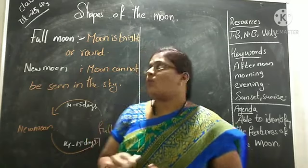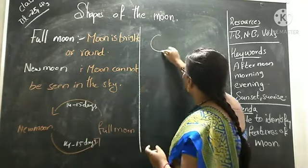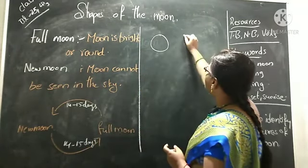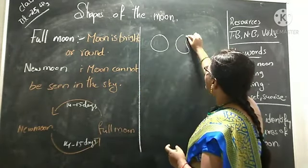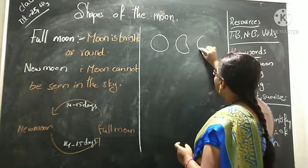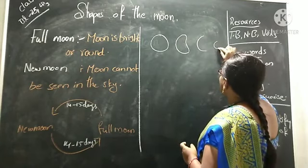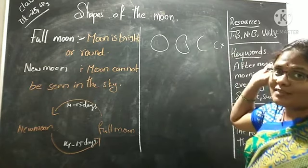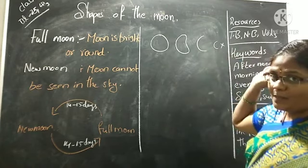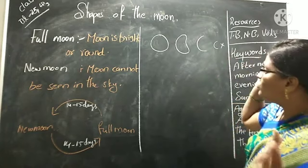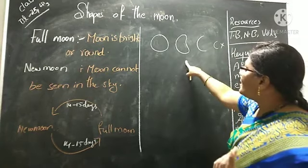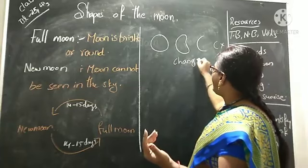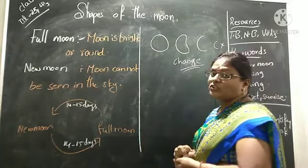No, one day the moon will be full and round. After some days if we see the moon, it will be different. After some more time we cannot see the moon in the sky at all. So like this, every day the moon changes.